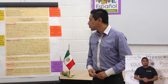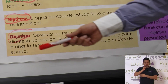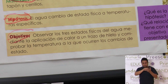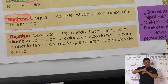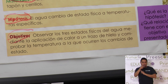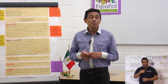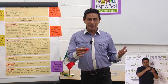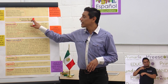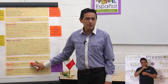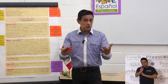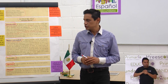Ahora vamos a ver el objetivo. El objetivo en este texto dice: observar los tres estados físicos del agua mediante la aplicación de calor a un trozo de hielo y comprobar la temperatura a la que ocurren los cambios de estado. No les quiero decir cuáles son los tres estados físicos del agua porque quiero que, a partir de este texto, ustedes piensen e identifiquen cuáles son, porque también de eso se trata un informe: informar cuáles son los estados físicos.